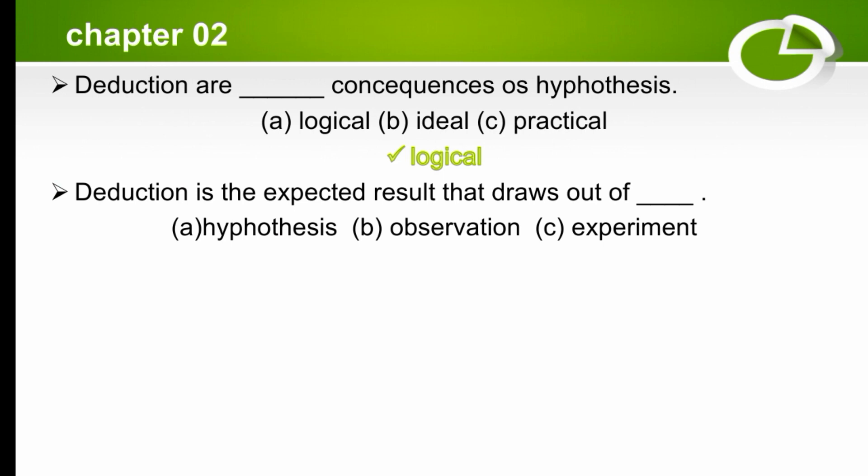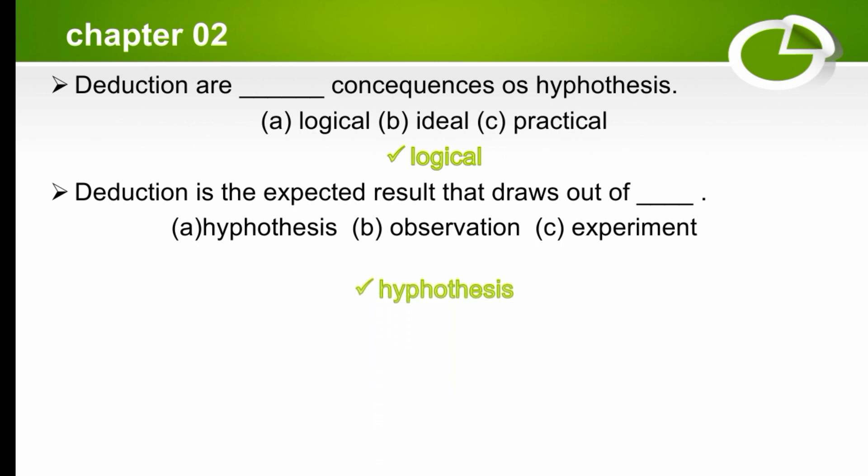Deduction is the expected result drawn out of which? The options are hypothesis, observation, or experiment. Deduction is the expected result drawn out of the hypothesis, so the right option is hypothesis.